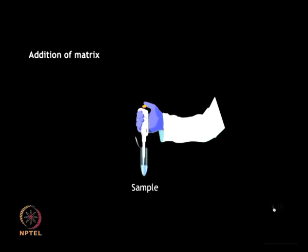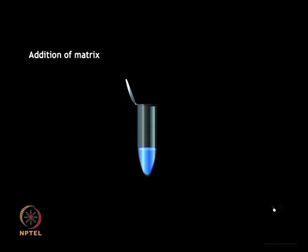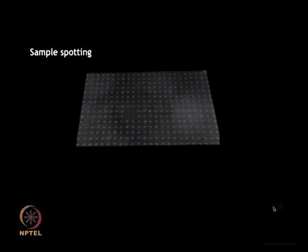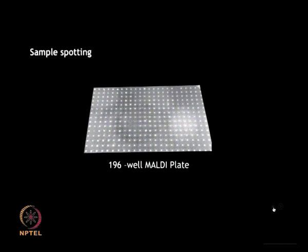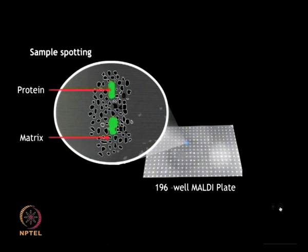The purified protein sample can be mixed with an aromatic matrix compound such as alpha-cyano-4-hydroxycinnamic acid or sinapinic acid in the presence of an organic solvent. The components are mixed thoroughly and then the solution containing the organic matrix with the embedded analyte of interest can be spotted onto a metallic MALDI sample plate. MALDI gives you an opportunity to analyze a large number of samples in a high throughput fashion.